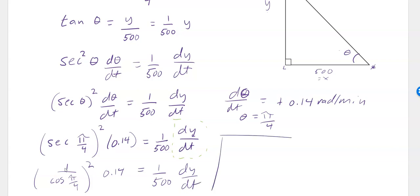You should remember from trigonometry how to find the secant of π/4 as an exact value. Secant of π/4 is 1 over cosine π/4, and then you're going to square that times 0.14 equals 1 over 500 dy/dt. Cosine of π/4 is the square root of 2 over 2, so you get 1 divided by the square root of 2 over 2, or (2 over the square root of 2) squared. This becomes 4 over 2, which becomes 2. Two times 0.14 is 0.28, and then when I multiply that by 500, I get dy/dt.